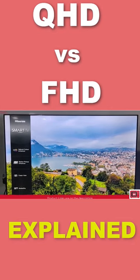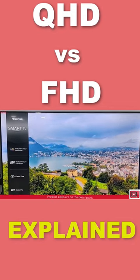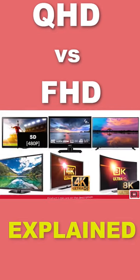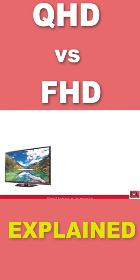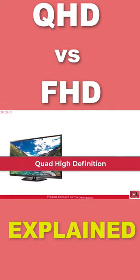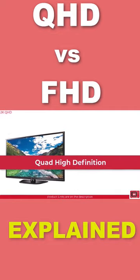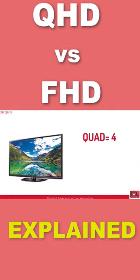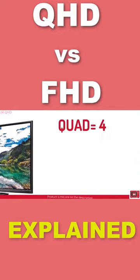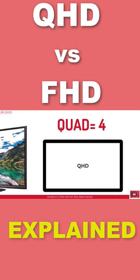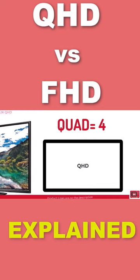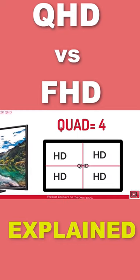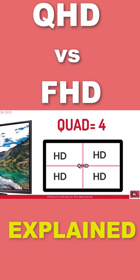2K HD or QHD means Quad High Definition. Quad means 4, which tells you one QHD display is as big as 4 HD displays, thus the name QHD.